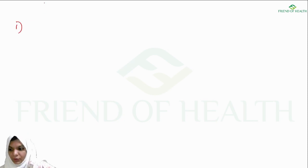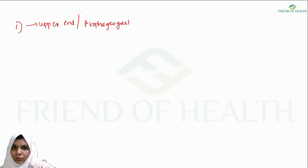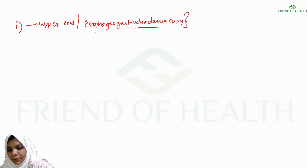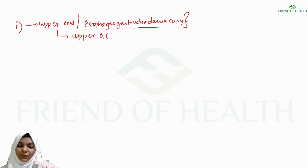Gastroendoscopy includes upper endoscopy, also referred to as esophagogastroduodenoscopy. Any pathology confined to the esophagus, gastric area, or duodenum can be visualized through this method. It is the best method for examining the upper GI mucosa.